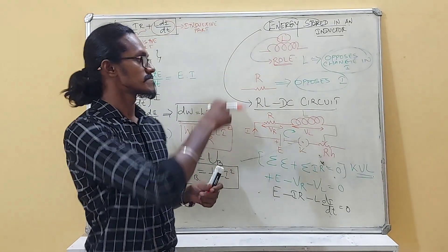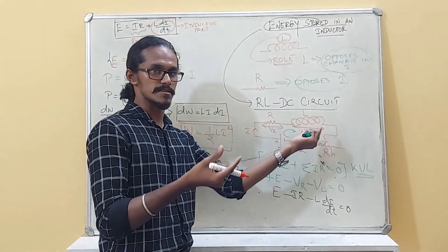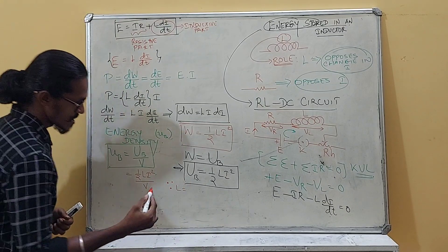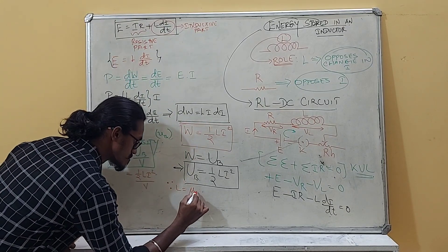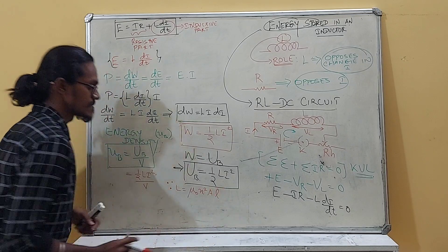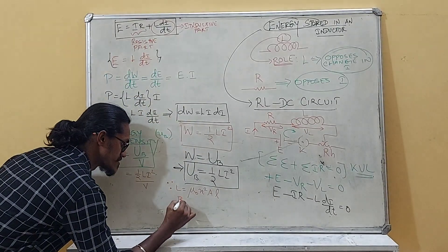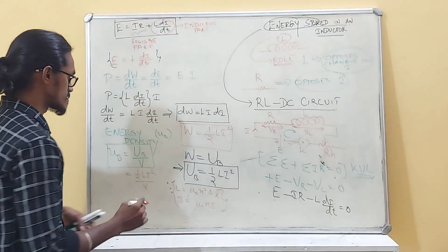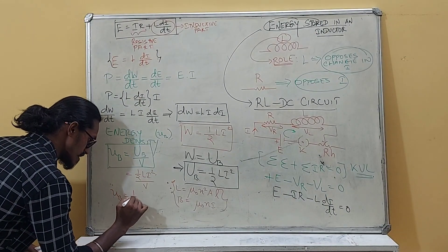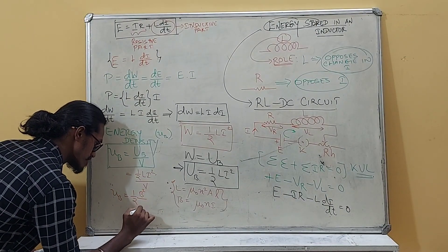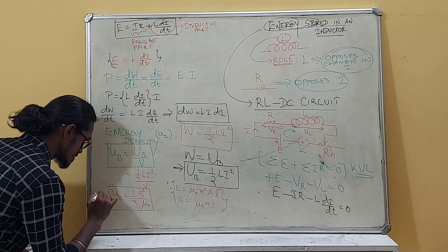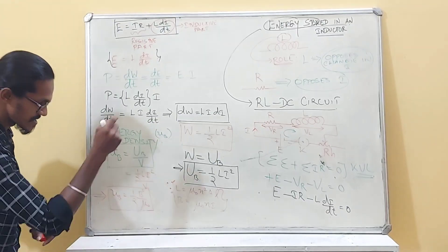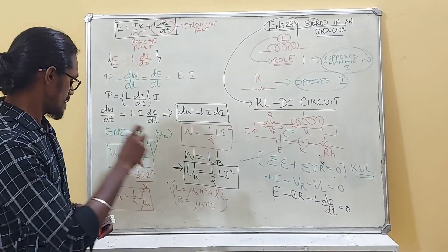Using the self-inductance of the solenoid L = μ₀N²Al and the solenoid's magnetic field B = μ₀NI/l, and substituting these two results into the energy density expression, we obtain the energy stored in an inductor: u_B = B²/(2μ₀).